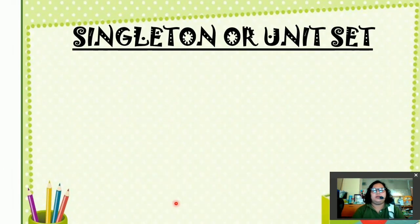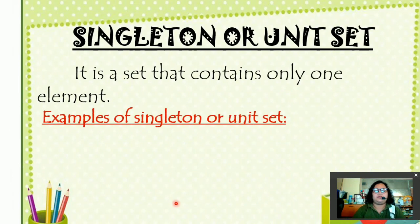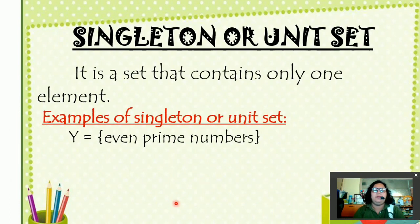Next one, singleton or unit set. It is a set that contains only one element. Examples of singleton or unit set: Set Y, even prime numbers. An even number has so many, but a prime number that is an even number at the same time, the answer is only 2.